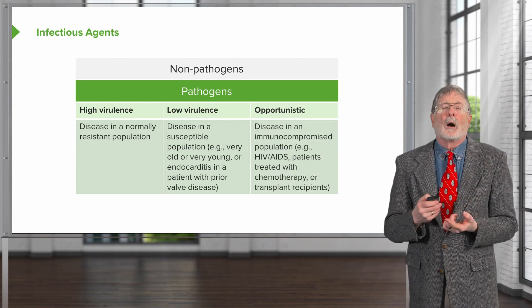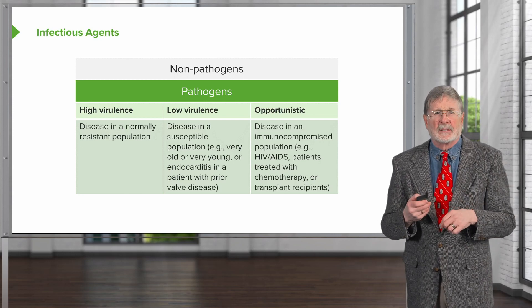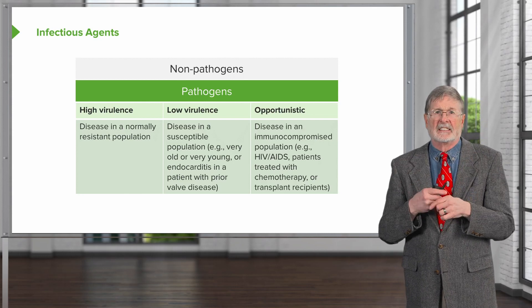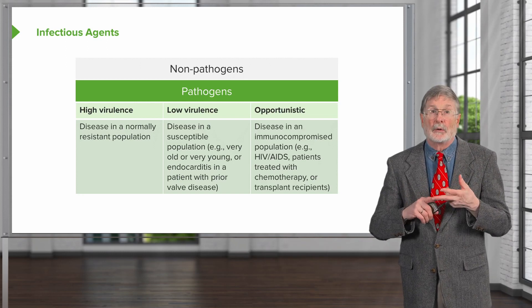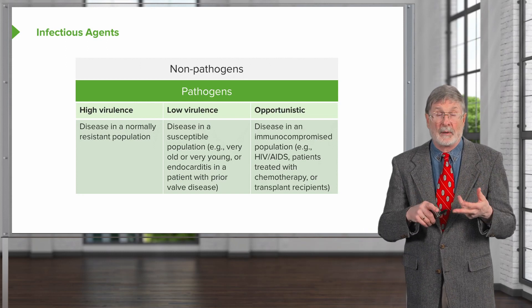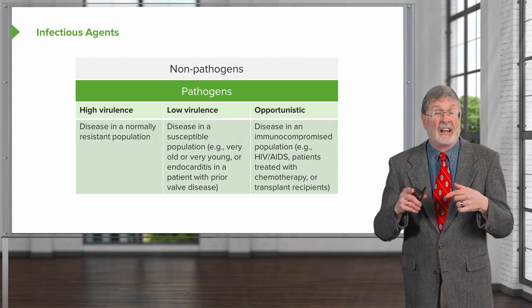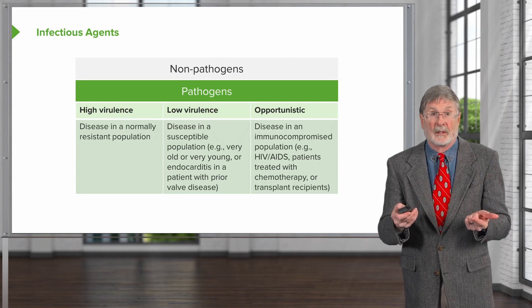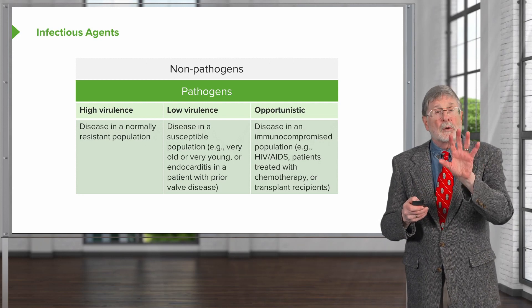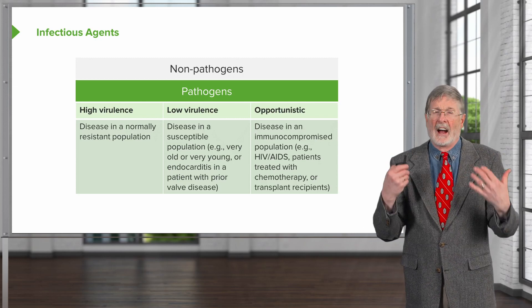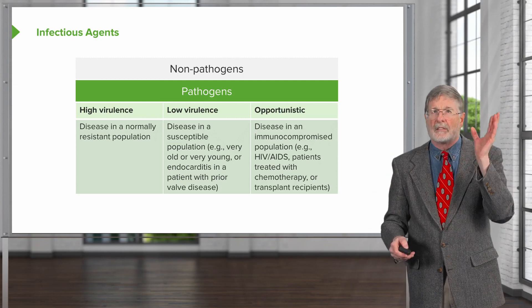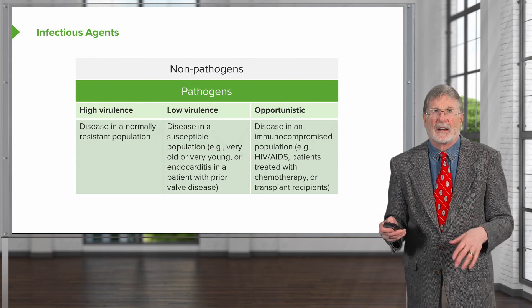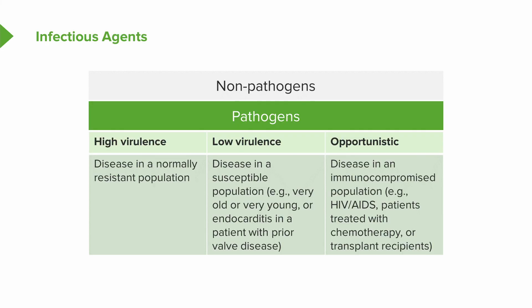Then there are opportunistic organisms — those that cause disease in an immunocompromised host. This could be someone who has gotten chemotherapy for cancer, has HIV/AIDS and lacks a good CD4 helper T cell response, or is a transplant recipient receiving immunosuppression. These are microorganisms that healthy individuals like you and me can easily fight off — they're everywhere and they can't do anything to us. But in an immunocompromised host, they can do a world of hurt.